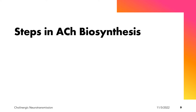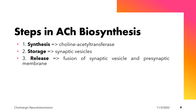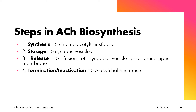The steps in the biosynthesis and inactivation of acetylcholine are as follows. The first step is synthesis, which involves the important enzyme choline acetyltransferase. The second step is storage — after synthesis, acetylcholine will be stored in the synaptic vesicle. The third step is release via exocytosis. After release, acetylcholine binds to its receptors, which is covered under receptor events. Finally, we have termination and inactivation of acetylcholine via the acetylcholinesterase enzyme.